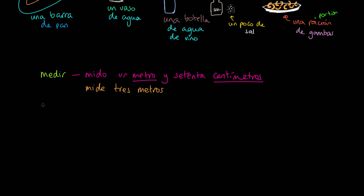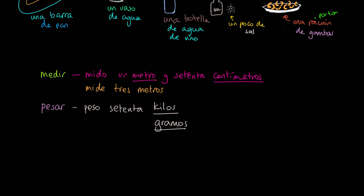We also have the verb pesar — to weigh. So for example, peso setenta kilos. Notice again, in Spanish we measure in kilos or gramos — kilograms and grams.